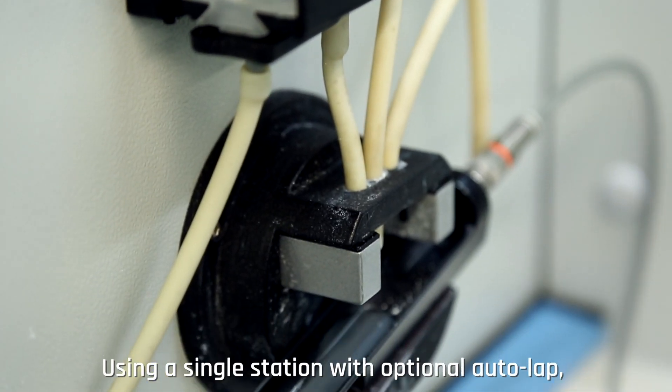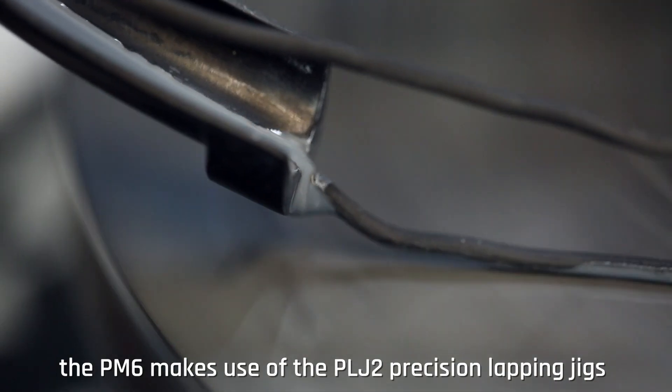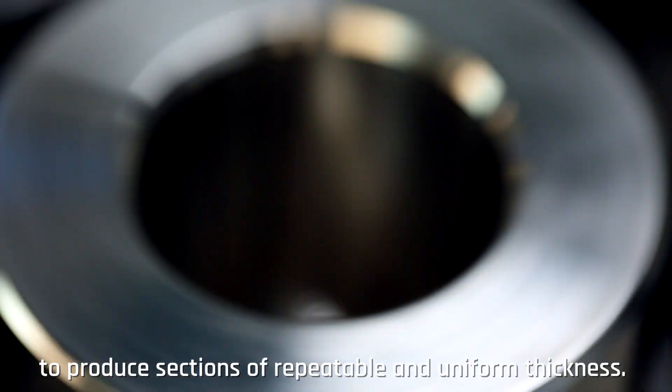Using a single station with optional autolap, the PM6 makes use of the PLJ2 Precision Lapping Jigs to produce sections of repeatable and uniform thickness.